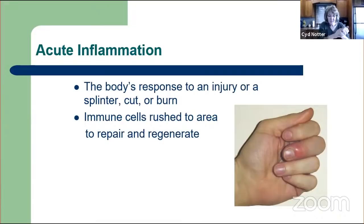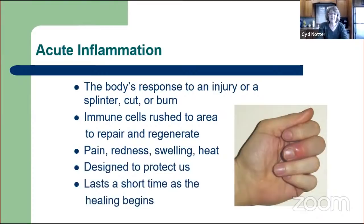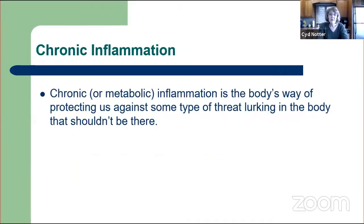The body rushes immune cells to that area whenever there's a splinter or a cut or a burn or any type of thing that needs healing. That can often result in pain and redness and swelling and heat. The word inflammation comes from the Latin word inflammare, which means to set on fire. The acute inflammation is designed to protect us and lasts only a very short time as the healing process begins. It's a very localized specific response to an infection or an injury, aimed at resolving a problem. Our bodies are so amazing—they're always striving to heal.